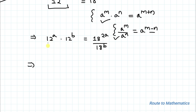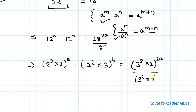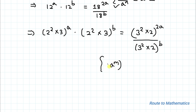Prime factorizing 12, I get (2 squared × 3) to the power a. Similarly, 12 to the power b gives (2 squared × 3) to the power b. For 18, we can write (3 squared × 2) to the power 2a, divided by (3 squared × 2) to the power b. We also know that (a to the power m) to the power n equals a to the power mn, so powers get multiplied.